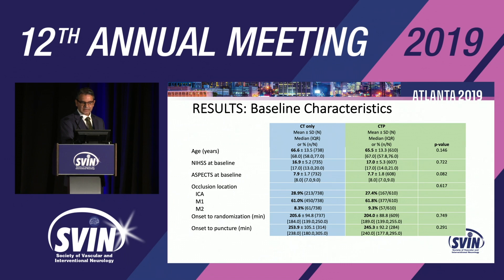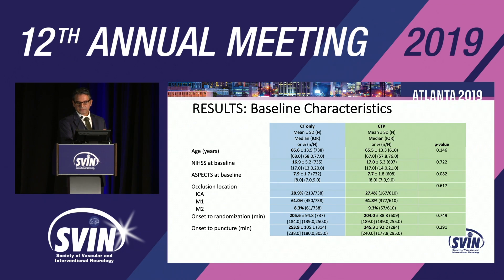This slide illustrates the baseline characteristics in the two populations, which are fairly comparable. Average age was about 65 to 66, NIH stroke scale of 17, and ASPECTS was slightly numerically higher in the CT group but not statistically significant. There was a pretty even distribution of occlusion locations — about 27–28% were ICA occlusions, and the majority were M1 occlusions. Most patients were treated around four hours from onset to puncture: 253.9 minutes in the CT-only arm and 245.3 minutes in the CT perfusion arm, which was not statistically significant.